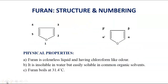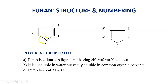Let us first see the structure and numbering of furan. A 5-membered ring containing an oxygen atom at the first position is furan. It contains 4 carbon atoms and 1 oxygen atom. The numbering starts from the heteroatom, so the heteroatom gets number 1, then the carbons get numbers 2, 3, 4, and 5. You can number it clockwise or anticlockwise. Another way of numbering furan is with respect to alpha and beta carbon atoms — the carbon at position 2 is called the alpha carbon, and the carbon attached to it gets the beta position. Similarly, we write alpha-dash and beta-dash on the other side.